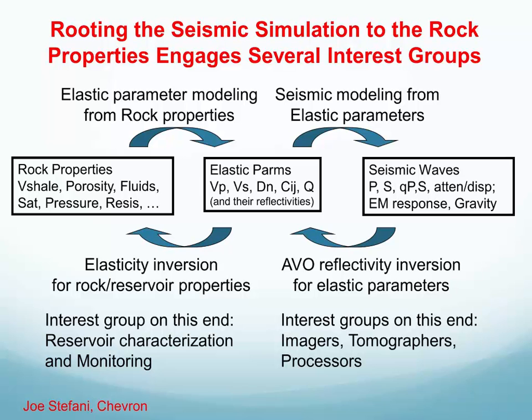Around the salt body we built heterogeneity using a geologic approach, as shown in this slide put together by Joe Stefani, who was instrumental in building the SEAM Phase I model. The idea was to start from the geology and petrophysics and define rock properties — things like V-shale, porosity, and fluid types — and then derive geophysical parameters such as VP, VS, density, anisotropy parameters, and resistivity parameters. This approach aimed to produce something geologically consistent where parameters were related in a geologically consistent sense.